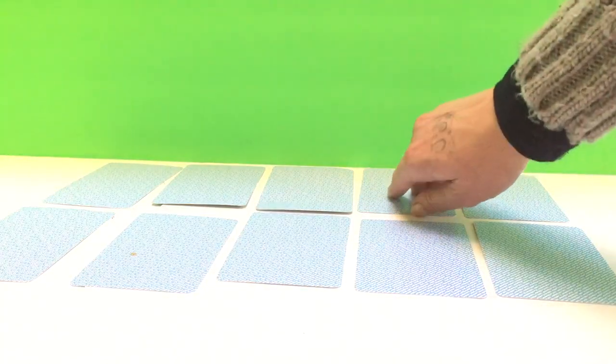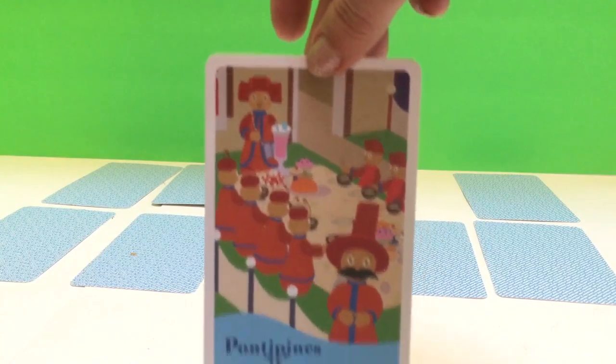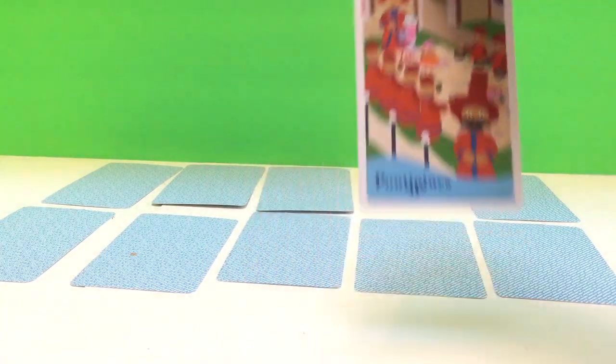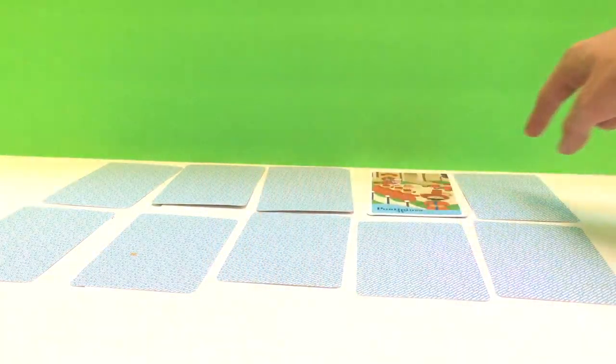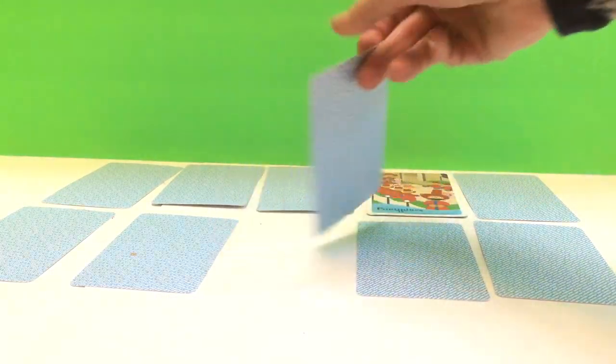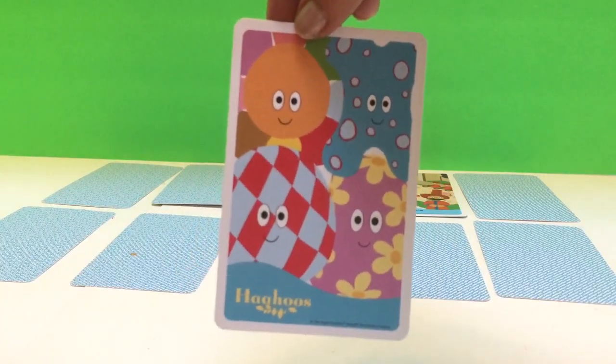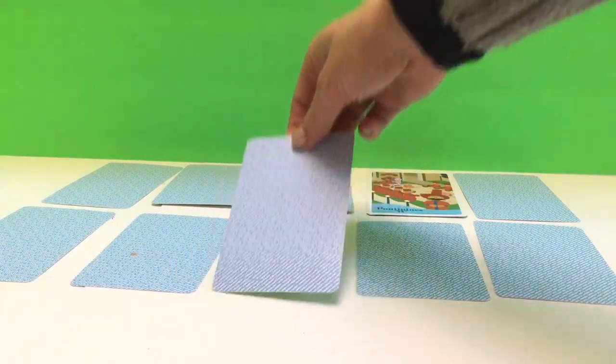My turn. Let's see what I turn over. I have the Pontipines. Where's the other Pontipines card? Could it be here? No, that's the Haahoos.